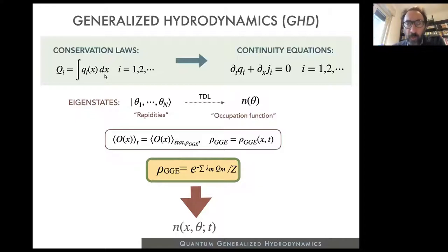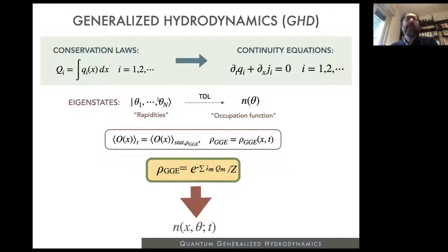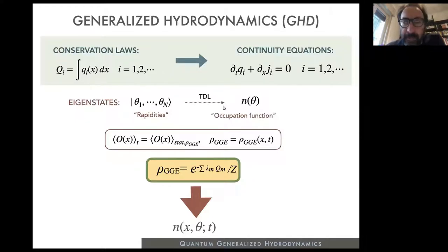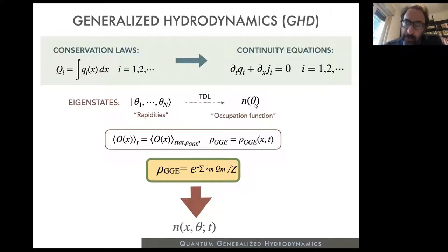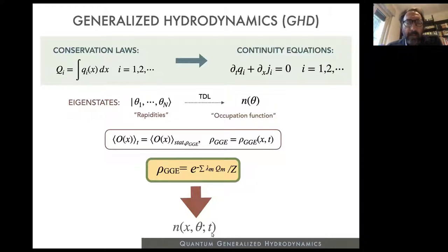In integrable systems, states are characterized by a set of numbers called rapidities. Throughout this talk, rather than discussing single rapidities, I will always focus on the occupation function of the rapidities, n(θ), and in particular how this occupation number depends on both space and time, x and θ, over time.